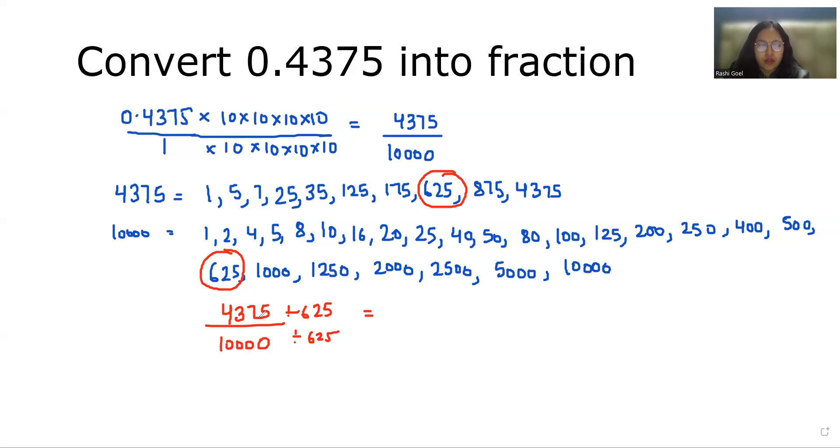So when we divide 4375 by 625, we get 7. And when we divide 10,000 by 625, we get 16.